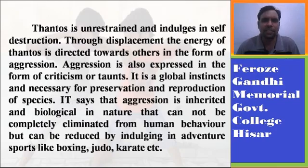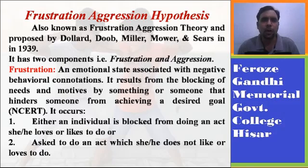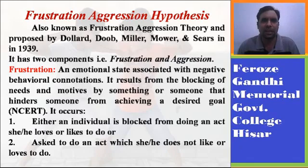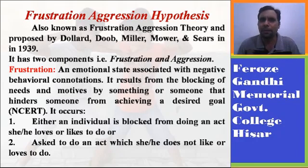The next theory is frustration-aggression hypothesis, also known as frustration-aggression theory, proposed by Dollard, Doob, Miller, Moore, and Sears in 1939. These psychologists and sociologists propounded the concept known as frustration-aggression hypothesis. This theory has two components: frustration and aggression. Frustration is an emotional state associated with negative behavioral connotations — if someone is frustrated, the behavioral aspects and outcomes are likely to be negative.